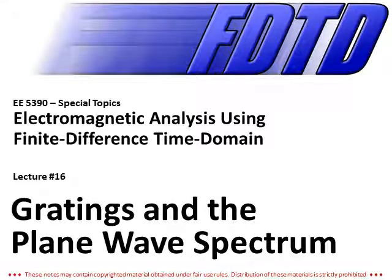We are going to take a break from finite difference time domain and talk about some electromagnetic theory that we are going to need in order to calculate reflection and transmission from a device. There's an easy way and a hard way to do this. I'm going to show you the hard way, and also the easy way, but the hard way has more information in it that is incredibly valuable sometimes, and I will show you examples of when that is valuable toward the end of the semester.